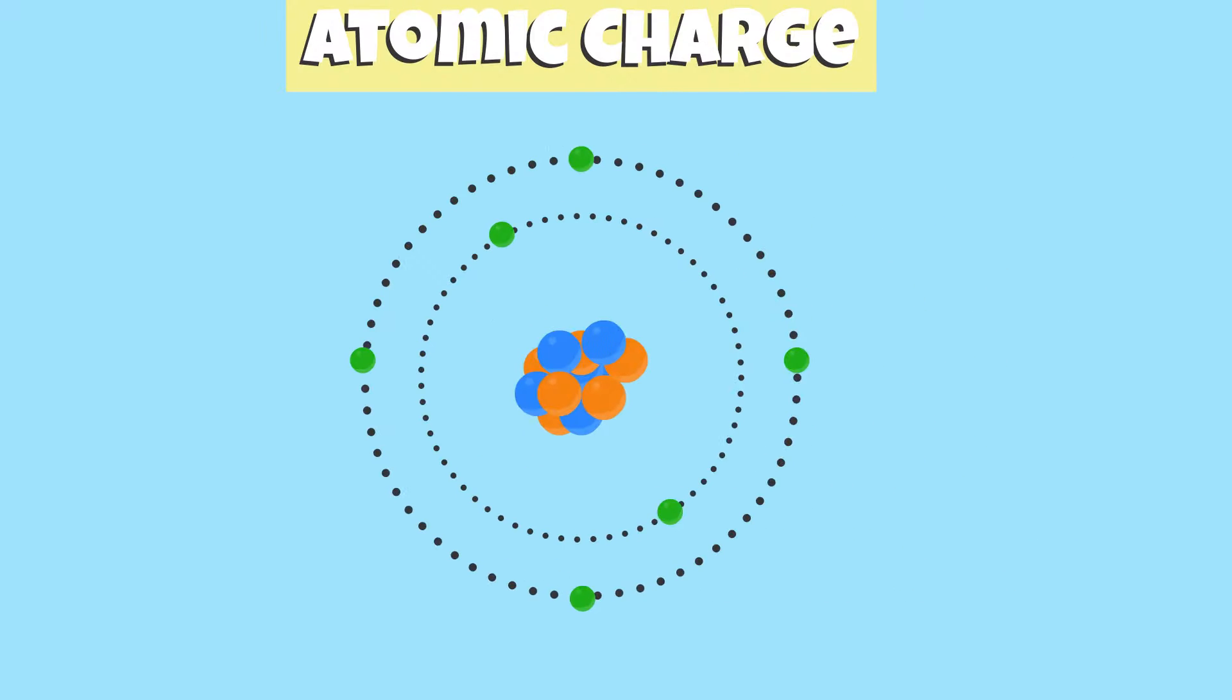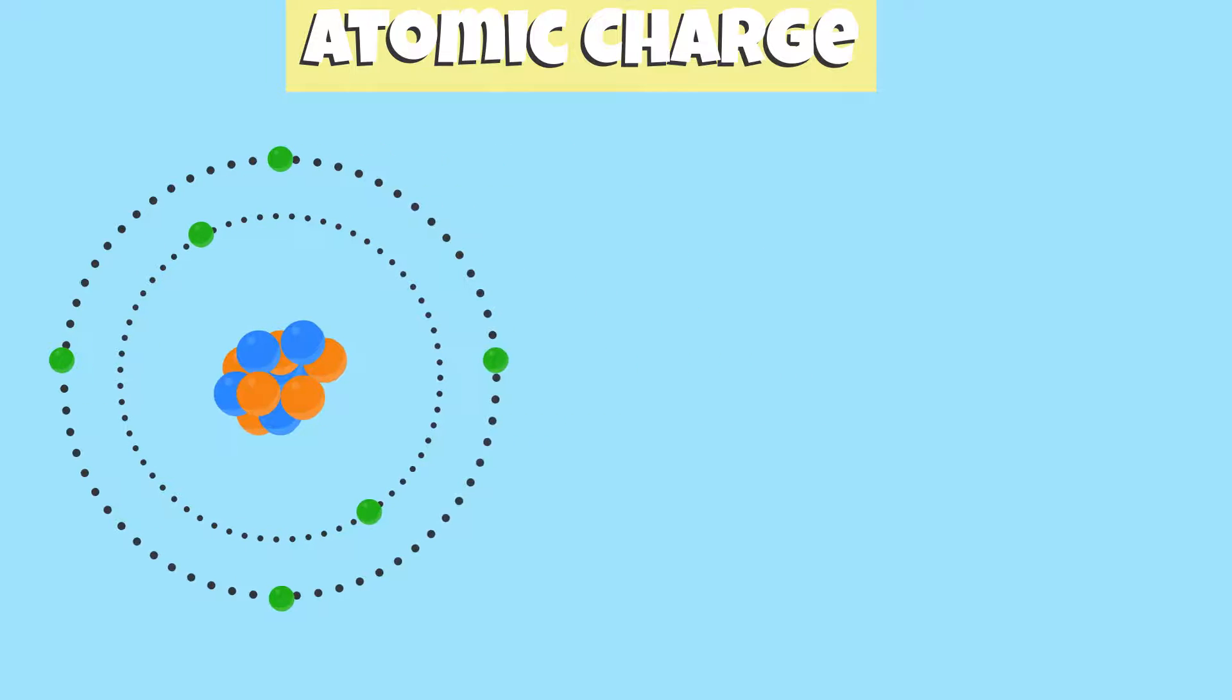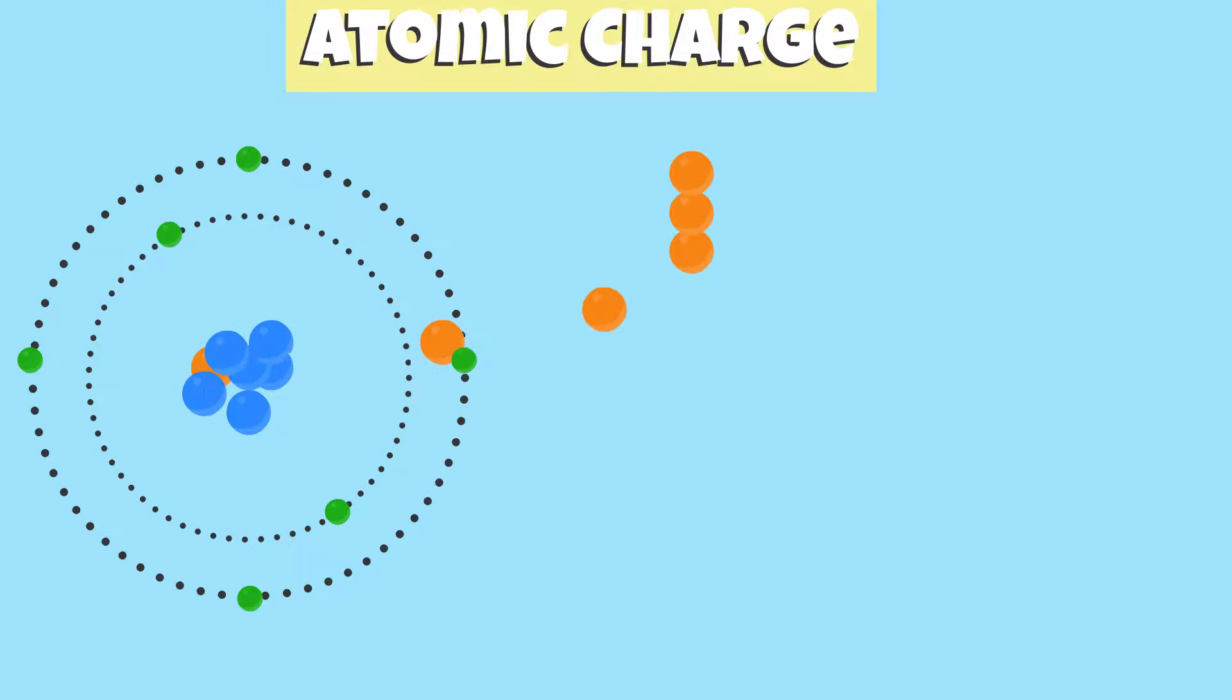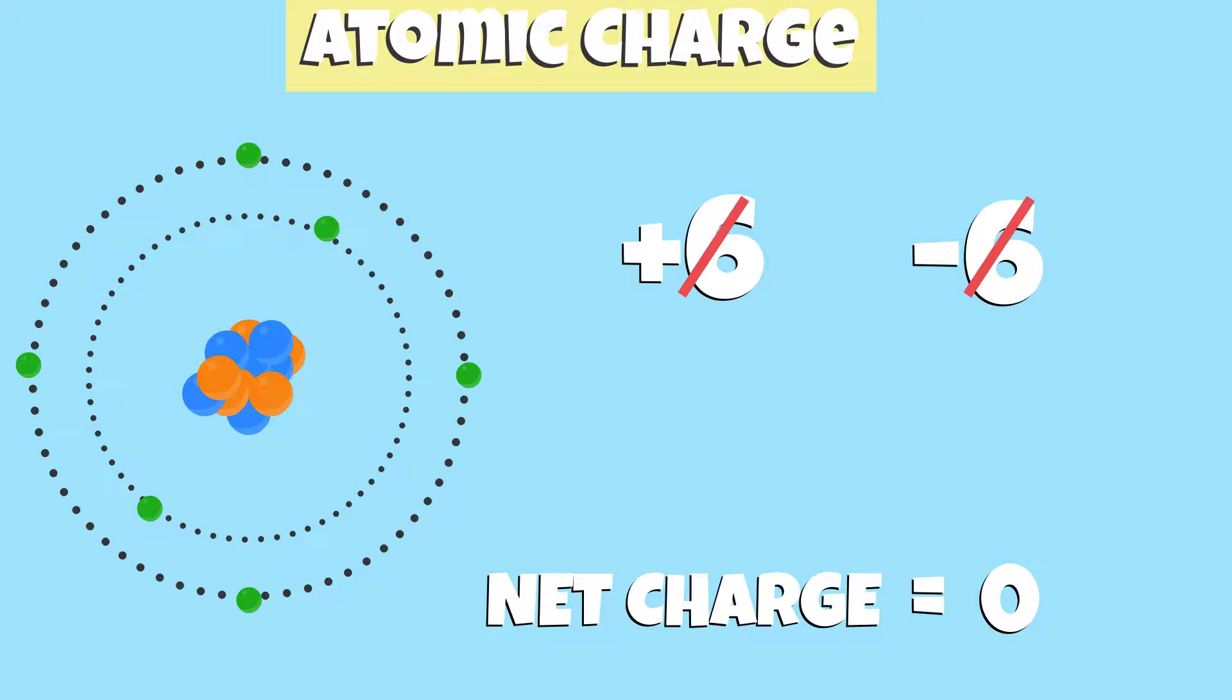If we were to measure the electric charge of an atom, we would find that it is neutral. In an atom, the number of protons is always equal to the number of electrons revolving around the nucleus. The total positive charge of the protons in the nucleus and the total negative charge of the electrons in the electron cloud cancel each other out, so the net charge of the atom is zero, making it neutral.